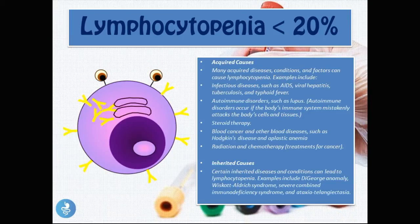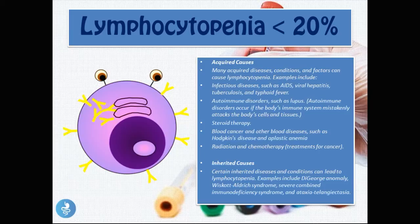The opposite of lymphocytosis is lymphopenia — lymphocyte values below 20 percent. Acquired causes include infectious diseases such as HIV/AIDS, viral hepatitis, tuberculosis, and typhoid fever; autoimmune disorders such as lupus; steroid therapy; blood cancers; Hodgkin's disease; aplastic anemia; and radiation and chemotherapy. Inherited causes include DiGeorge anomaly, Wiskott-Aldrich syndrome, severe combined immunodeficiency syndrome, and ataxia-telangiectasia.